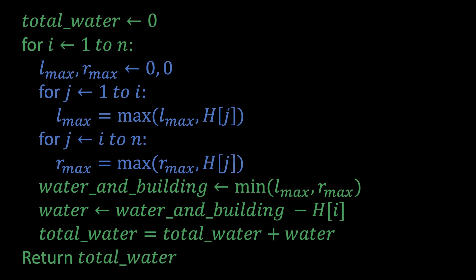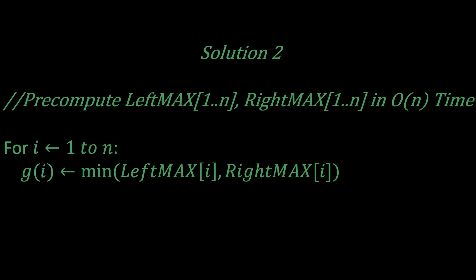One very useful way of optimizing algorithms is the idea of pre-computing. Before we start the main algorithm, can we pre-compute some values that can help us in a later stage of the algorithm? If we can somehow pre-compute lmax and rmax before entering the algorithm in an array, then we can bring down the complexity of the algorithm to O(n) time and O(n) space.